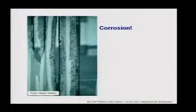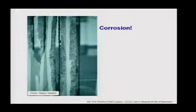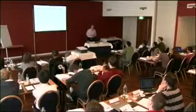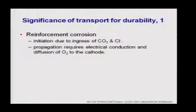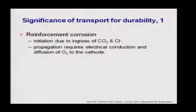You learned yesterday that corrosion is the major problem limiting the service life of concrete structures. This is one example where a steel bar once the size of a finger is today only a thread because of corrosion. Corrosion is initiated by carbonation or chloride ingress, and propagation requires electrical conduction — ions must be able to move — or diffusion of oxygen to the cathode. If that is stopped, corrosion will stop or at least be very much slower.